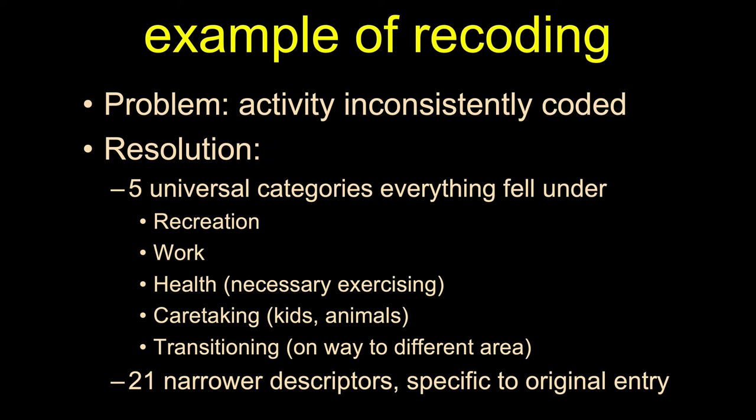What I decided to do is create five general bins — five general categories — and put all of the responses into one of those bins, creating an additional column. The responses were categorized as either about recreating, working, health, caretaking, or traveling to a different location. I then created another column with more specific descriptors that were much closer to what people originally responded. I'm going to primarily use these five broad categories for my analyses, because that's how I can look at larger patterns.